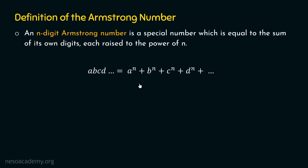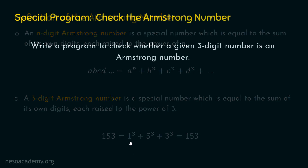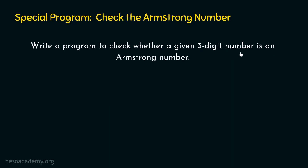A three-digit Armstrong number is a special number which is equal to the sum of its own digits, each raised to the power of three. For example, 153 is an Armstrong number because it equals 1³ + 5³ + 3³, which gives us 153. This means 153 is an Armstrong number, and we are now ready to write the program.